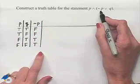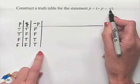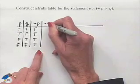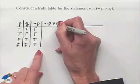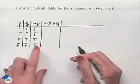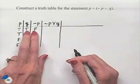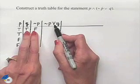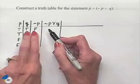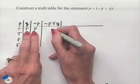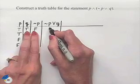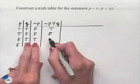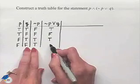Next, inside the parentheses, we connect not P with Q using the disjunction 'or', giving us the column not P or Q. To fill in this column we use columns 2 and 3 combined with 'or'. A disjunction is true as long as one part is true: true or false is true, false or false is false, true or true is true, false or true is true.